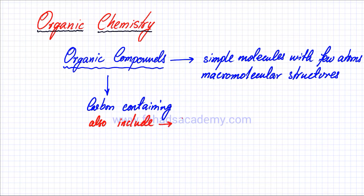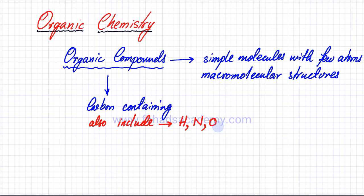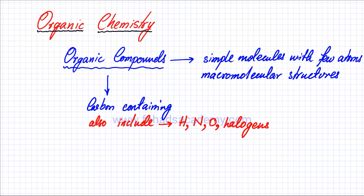The most notable element apart from carbon in organic compounds is hydrogen, which is probably one of the most common. Nitrogen is also present in plenty of molecules, and oxygen is present in a lot of alcohols and carboxylic acids. Halogens also form part of different organic compounds. There are plenty of other elements too, but hydrogen, nitrogen, oxygen, and halogens are among the most common elements found in organic compounds.